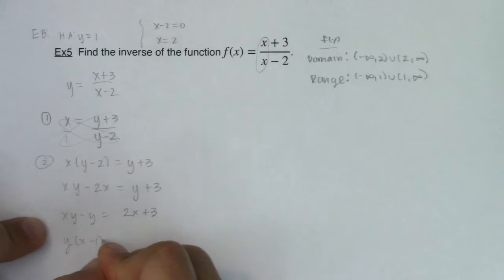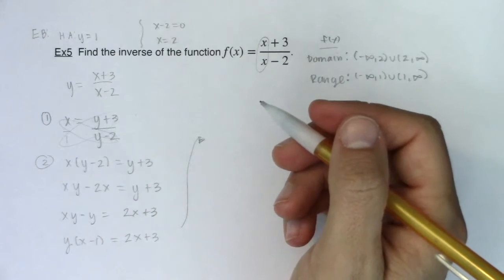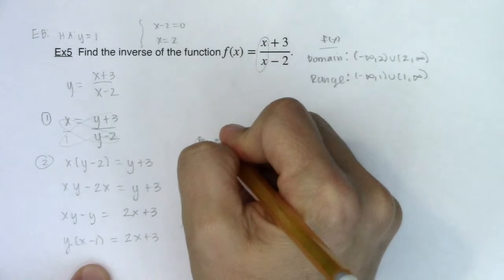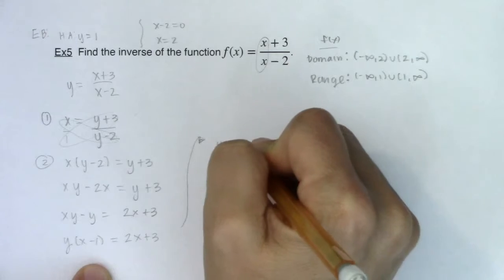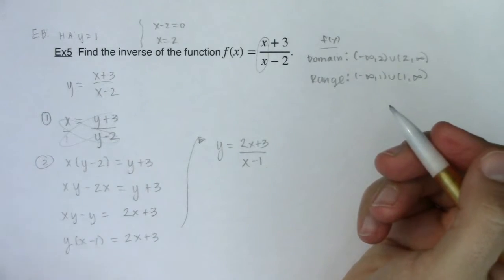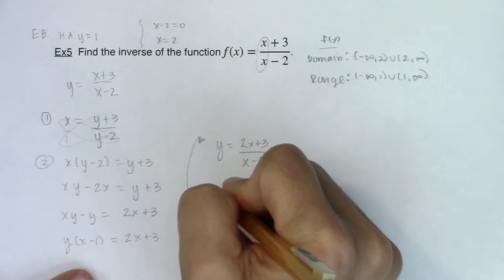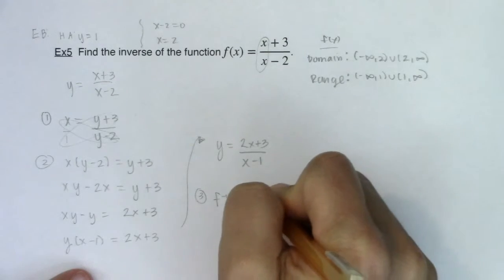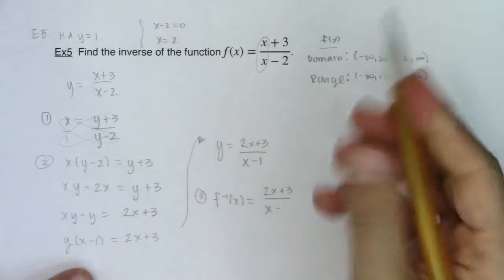If I factor out the y, I've got y times x minus 1. Alright, let me move this over here. The next thing I want to do is divide both sides of this equation by x minus 1. So I will have y being equal to 2x plus 3 over x minus 1. And that should be my inverse function. Let's check it out though.